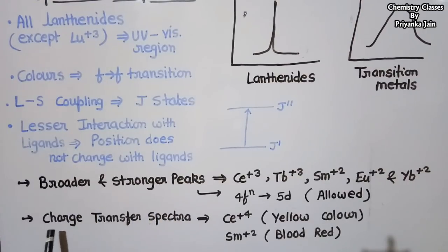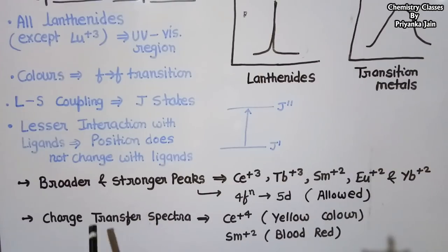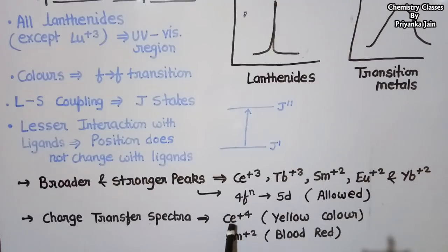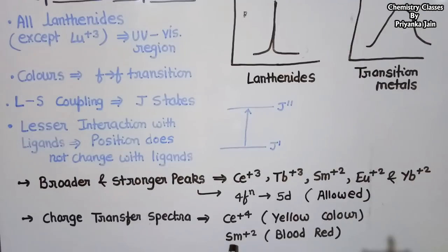Another type of spectra — charge transfer spectra — can also be observed. For example, the yellow color of Ce⁴⁺ is due to charge transfer spectra, while the blood-red color of Sm²⁺ is also due to charge transfer spectra.